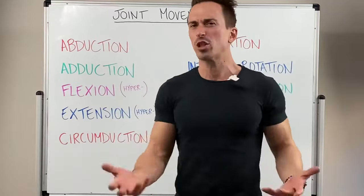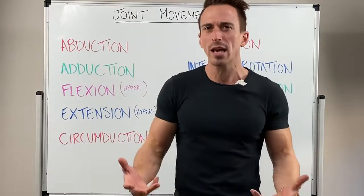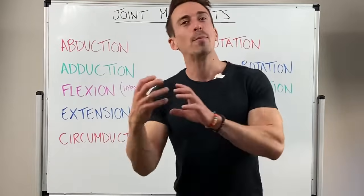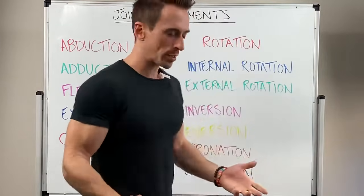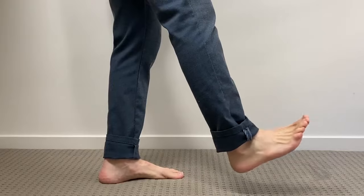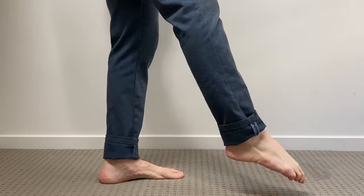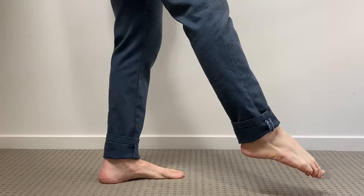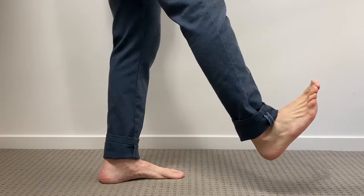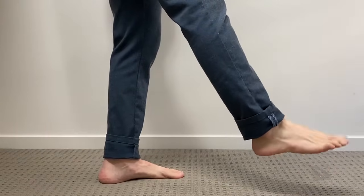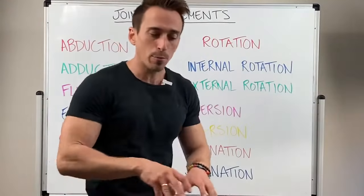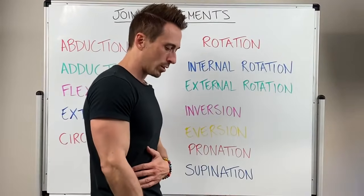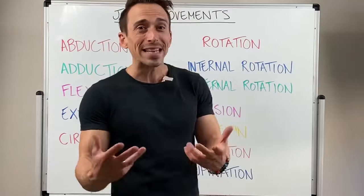So we don't use flexion and extension when we look at the foot. What we use is dorsiflexion and plantarflexion. Dorsiflexion is where we bring the foot or the toes up towards the top of the body — pointing the toes upwards. Plantarflexion is pointing the toes down towards the ground. The way I remember that is if you're planting something in the ground — plantarflexion — pointing the toes down towards the ground.